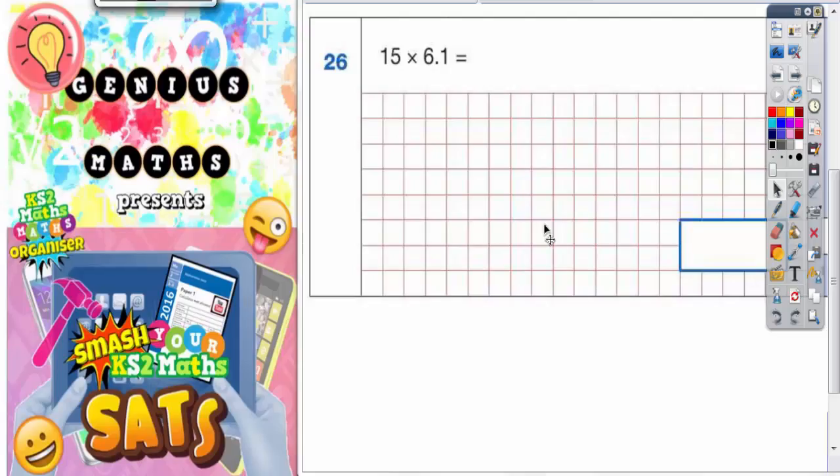Question 26. 15 times 6.1. Now the easiest thing to do here is to split the calculation into two separate calculations.